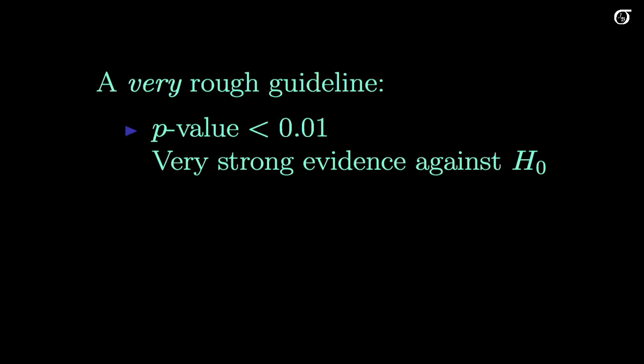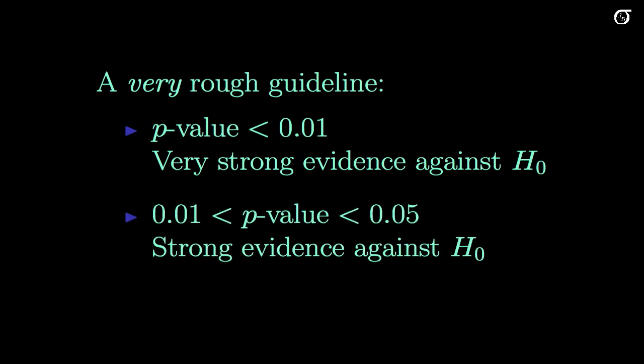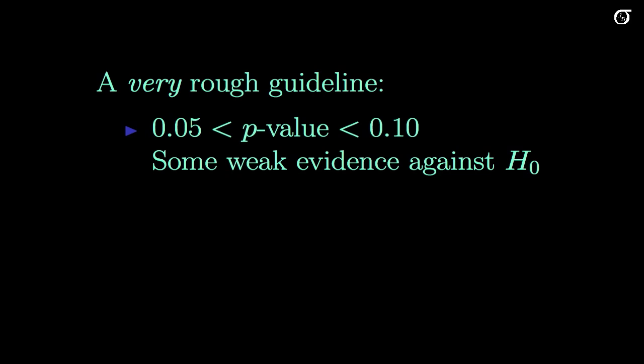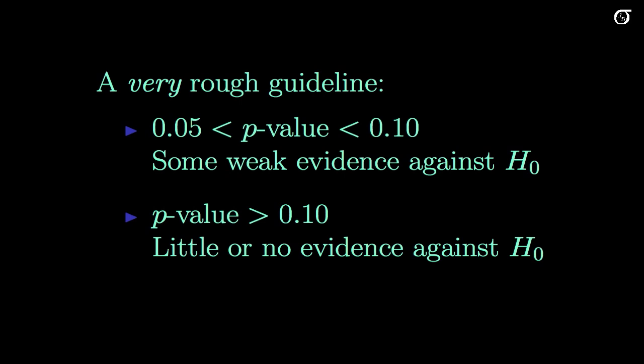On a very rough guideline — and opinions would differ here — if your p-value is less than 0.01, we have very strong evidence against the null hypothesis. If your p-value falls between 0.01 and 0.05, we still have strong evidence against the null hypothesis, but it's certainly not overwhelming. If it falls between 0.05 and 0.1, we've got a little bit of evidence against the null hypothesis, depending on the problem, but it wouldn't be considered very strong in most contexts. And if your p-value is bigger than 0.1, then typically we think there's little or no evidence against the null. If we get a p-value close to 0.1 — say 0.11 or 0.12 — it depends on the situation, but once we start getting up into the 0.2s and 0.3s and beyond, we pretty much say there is no evidence against the null hypothesis.